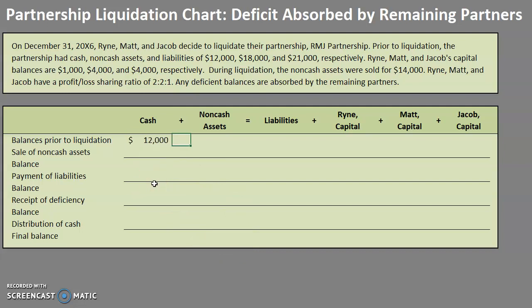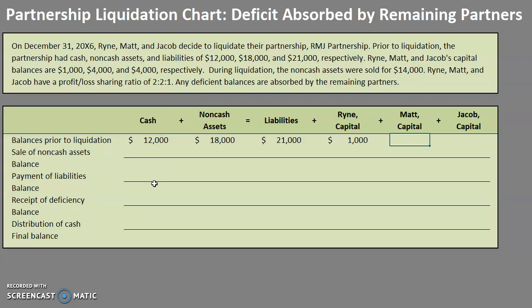Let's start by putting in our balances before liquidation. We had $12,000 in cash, $18,000 in non-cash assets, $21,000 in liabilities. Ryan had a capital balance of $1,000, Matt had $4,000, and Jacob's was also $4,000.